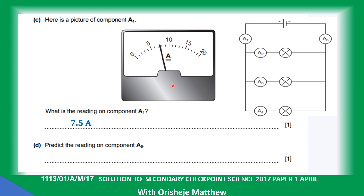Predict the reading of the ammeter at the other end. Both ammeters are connected to the same battery via the same wire, so they carry the same current. Therefore the reading is going to be 7.5 amperes.